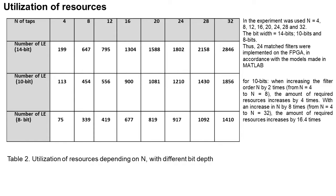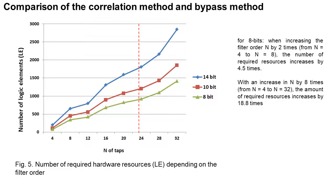In conclusion, when increasing the filter order N by 2 times — from N=4 to N=8 — the amount of required resources increases by 4 times, and with increasing N by 8 times from N=4 to N=32, the required resources increase by 16 times. The same dependence can be seen in Figure 5; for example, for 8 bits, when increasing the filter order N by 2 times from 4 to 8, the required resources increase by 5 times.